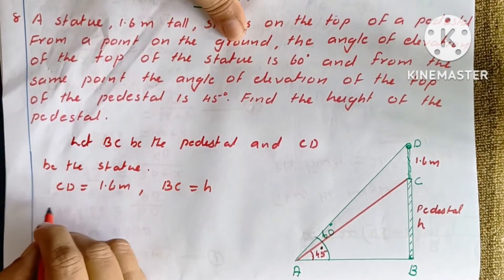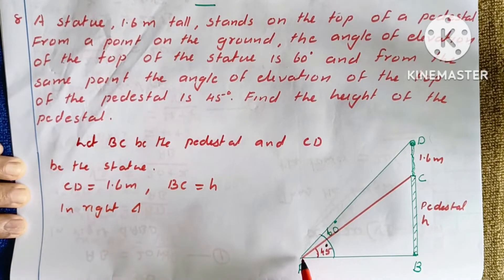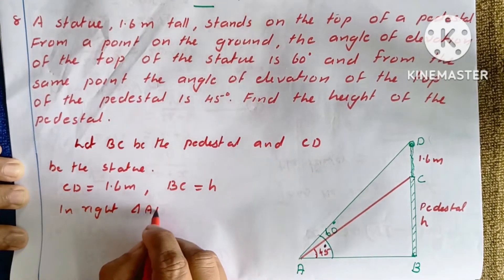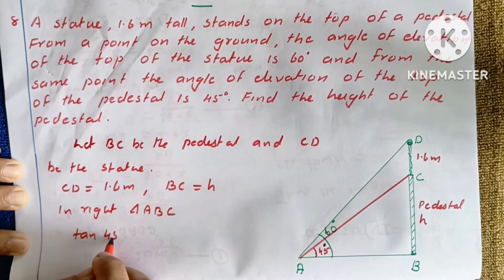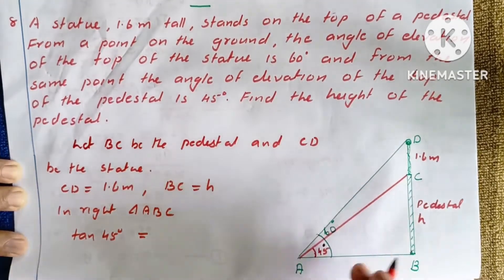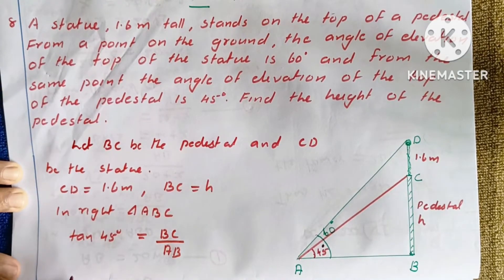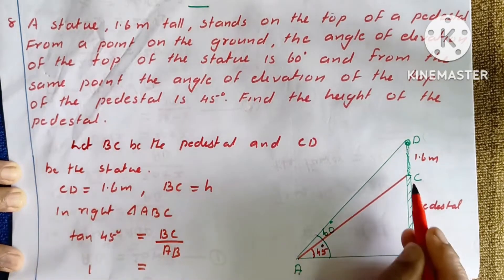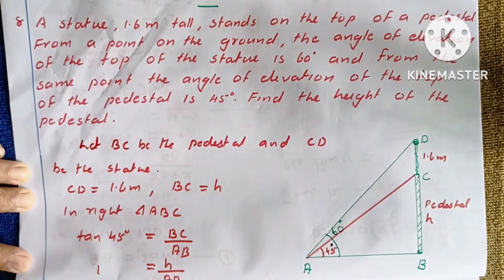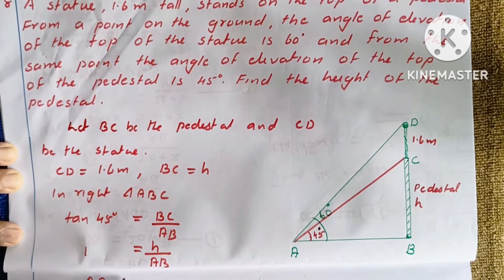In the right triangle ABC, the angle is 45 degrees. Tan 45° equals BC by AB — that is, opposite side by adjacent side. So BC by AB equals 1, meaning AB equals h.